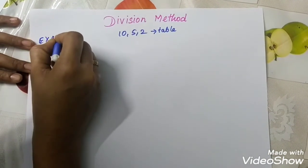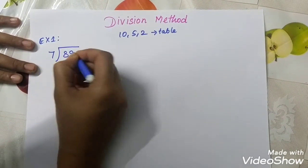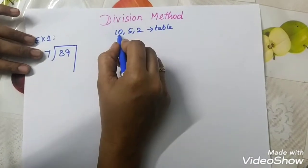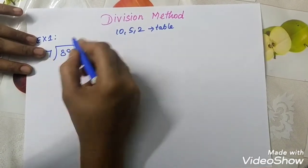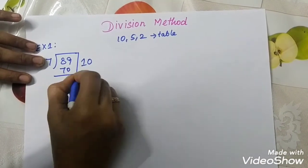First exercise, we go for first exercise, 7 divided by 89. So, can take 10, 10, 7's are 70. So, you can write 10, 7's are 70.